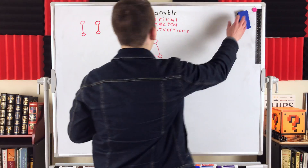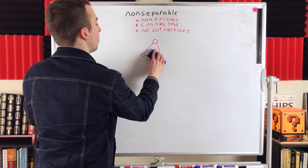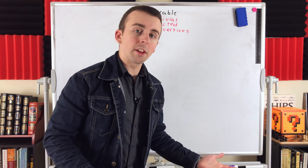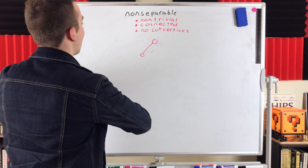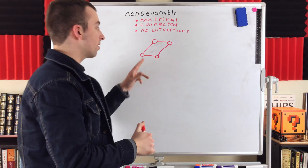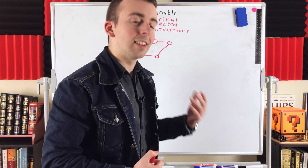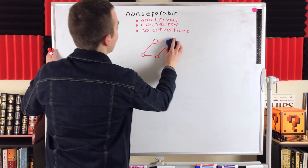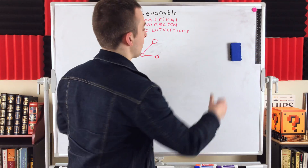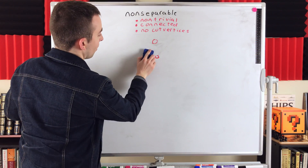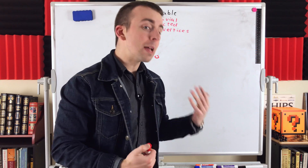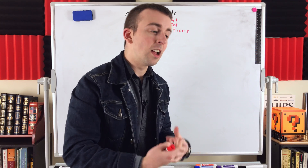One other thing to point out: a non-separable graph has no cut vertices, so it cannot be disconnected by deleting a single vertex. But there's no guarantee that you can delete more than one vertex and still have a connected graph. For example, this cycle graph on four vertices is non-separable — we can't delete a single vertex to disconnect it. But the resulting graph after one deletion is not non-separable itself. We can disconnect it by deleting another vertex. So non-separability only guarantees no single vertex deletion disconnects the graph; you may still be able to disconnect it by deleting two or more vertices.